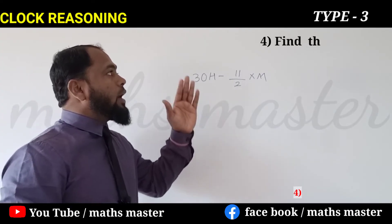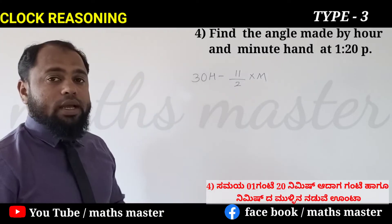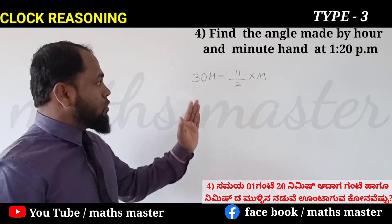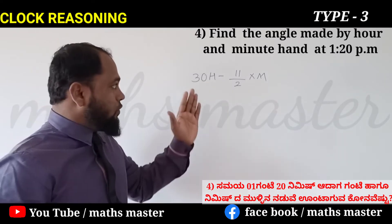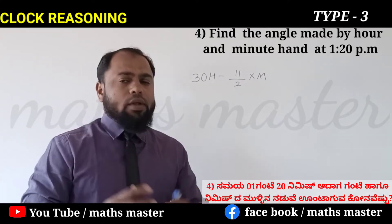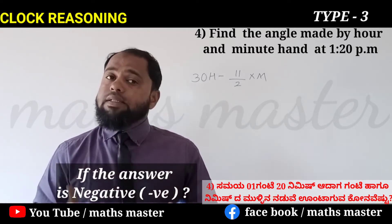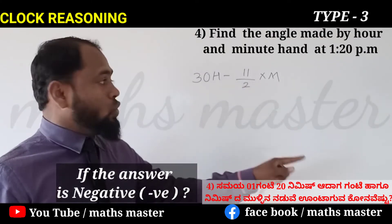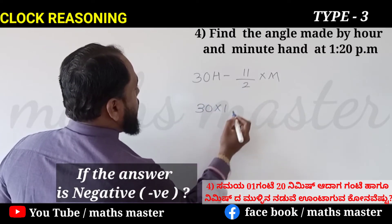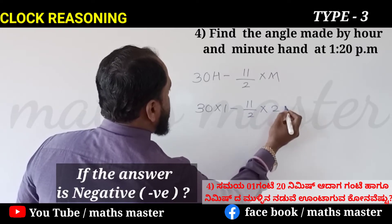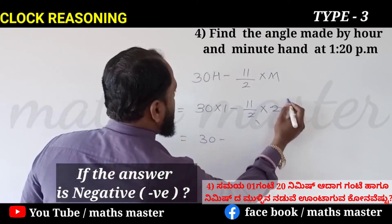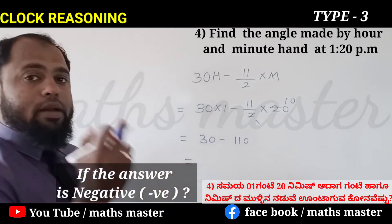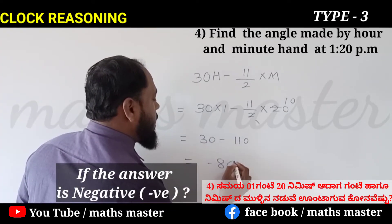Let's come to one more problem. What is the angle made by the hour and minute hand at 1:20? Apply the same formula: 30H minus 11 by 2 into M. So 30 into 1 is 30, minus 11 by 2 into 20, which is 110. So 30 minus 110 gives a negative result.